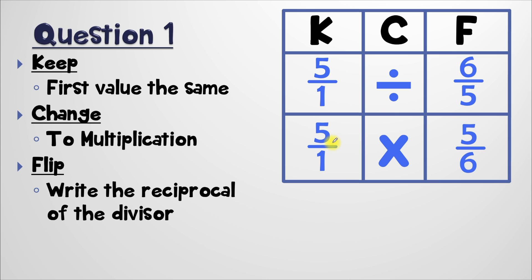So now we've got it rewritten as a multiplication problem, so all we have to do is multiply across. So first we'll do five times five, and that gives us 25. Next, we'll multiply one times six, and that will give us six. So our answer is 25 over six. But the problem with that is that it's improper — the top of our fraction is bigger than the bottom. So we need to change that. In order to do that, we're going to have to see how many times six can go into 25.